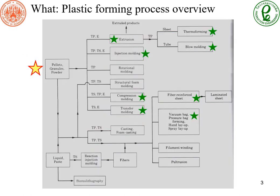There are many processes in plastic forming. We will focus on just a few of them. Our raw material usually starts with plastic pellets. You may know that some processes can be used for TS, TP, or E. What does that mean?